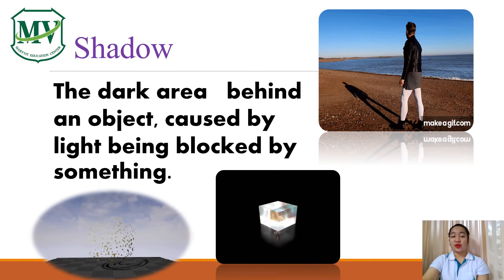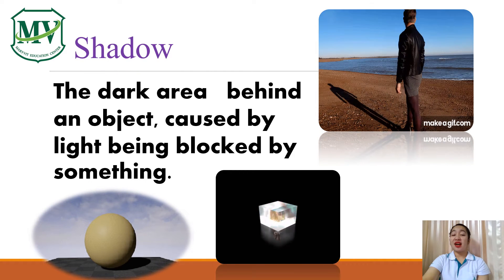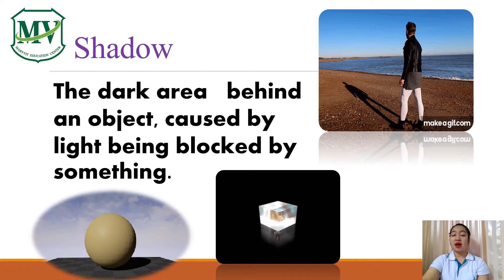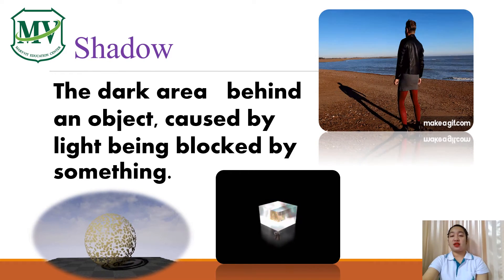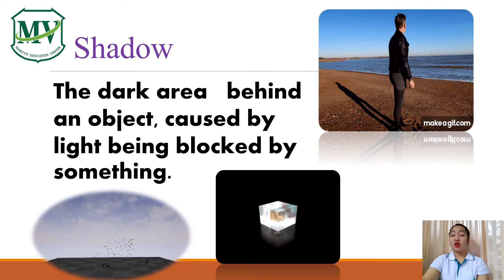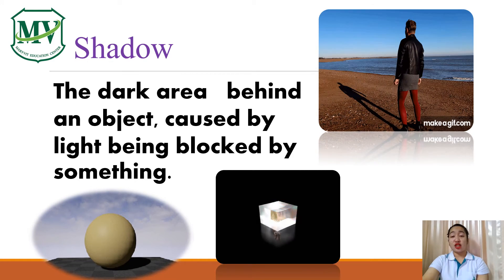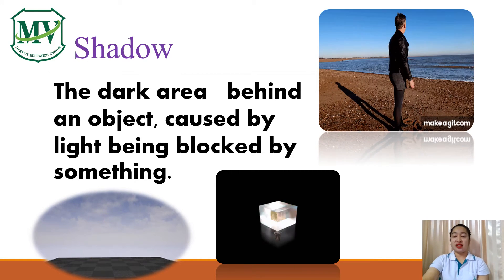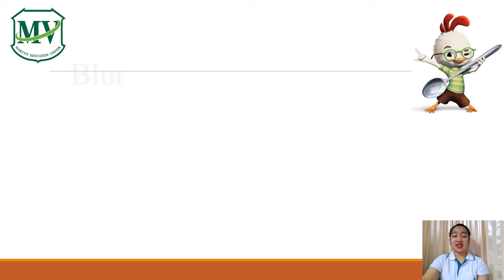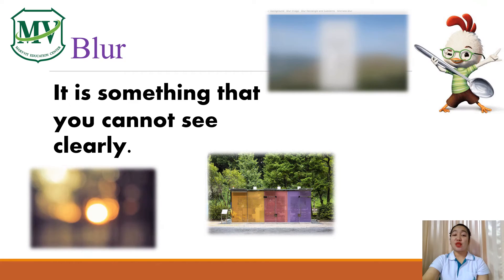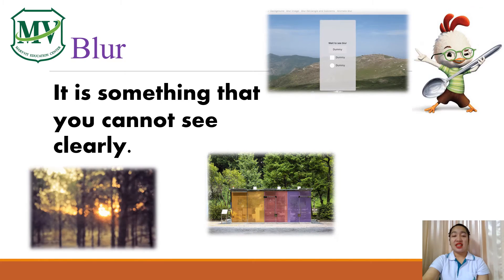Next, shadow. It is the dark area behind an object caused by light being blocked by something. In other words, they are found behind the object. Examples are shadow of a ball, shadow of a box, and shadow of a person. Next, blur. When we say blur, it is something that you cannot see clearly.